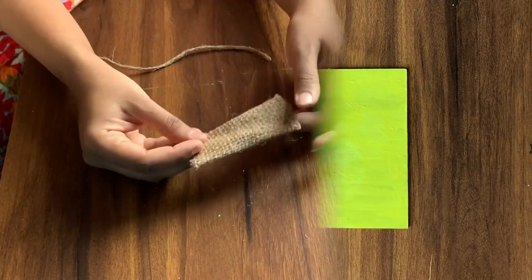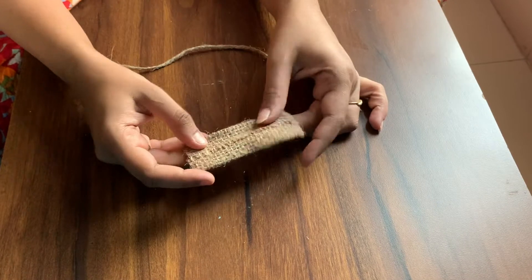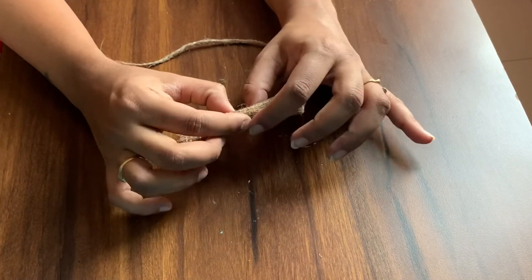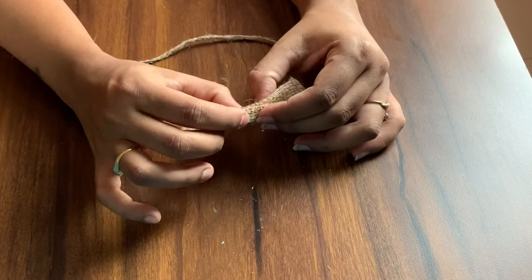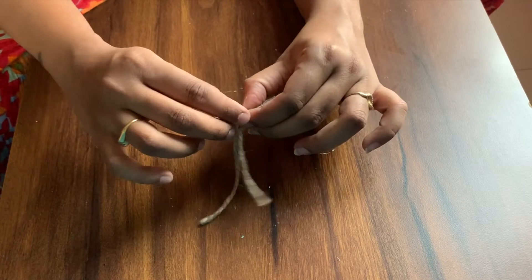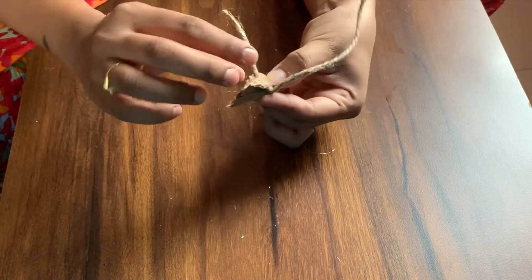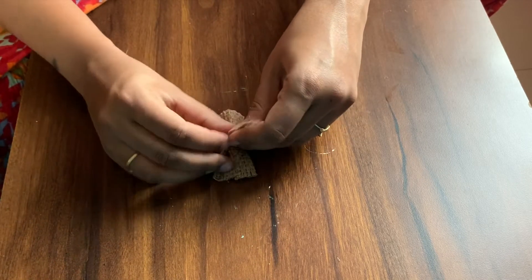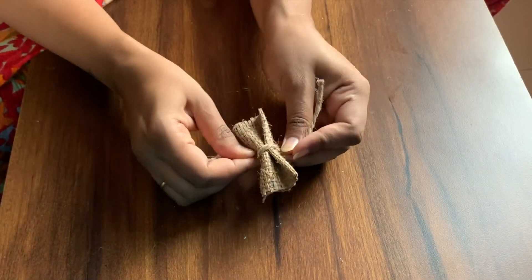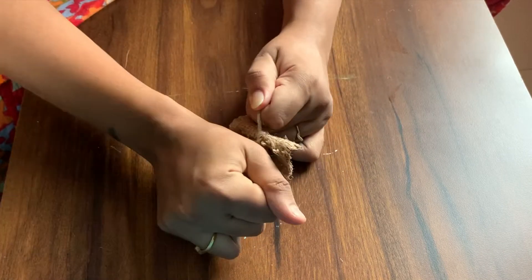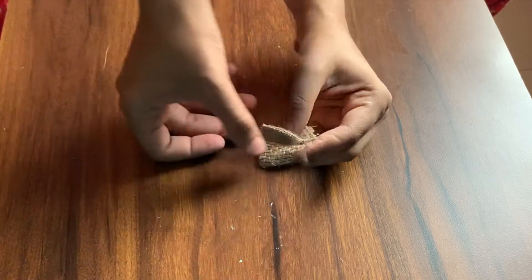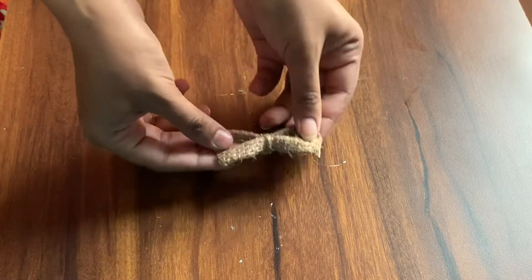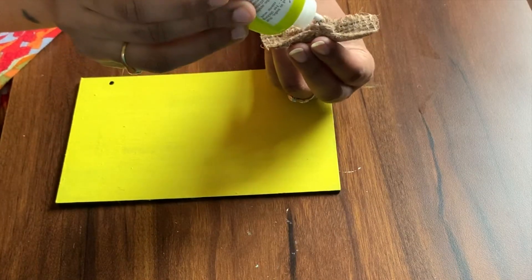After two coats have been applied, now we will make a bow. So basically I have a burlap cloth taken in a rectangular shape and cut it like this. We will make a bow and then we will tie it with a jute rope.